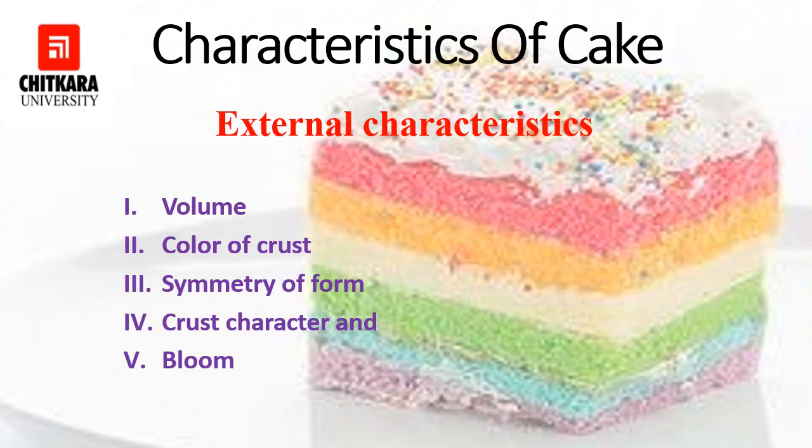Now, discussing about the external characteristics of your cake — in this characteristic, there are five things which we can see on a cake and we can judge the characteristics by: volume, color of the crust, symmetry of form, crust character, and bloom.